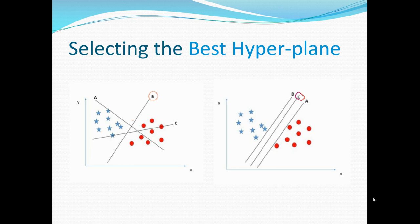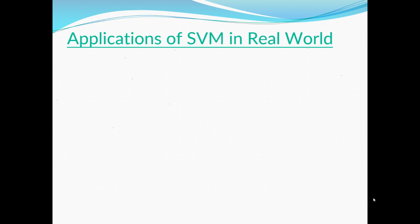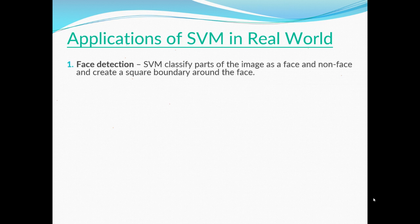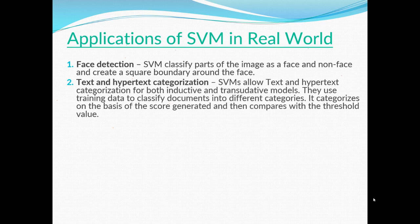Now let's look at the real-world applications of SVM. In face detection, SVM classifies parts of the image as face or non-face and creates a square boundary around the fit. For text and hypertext categorization, SVMs allow categorization in both inductive and transductive models. They use training data to classify documents into different categories based on a score compared against a threshold value.